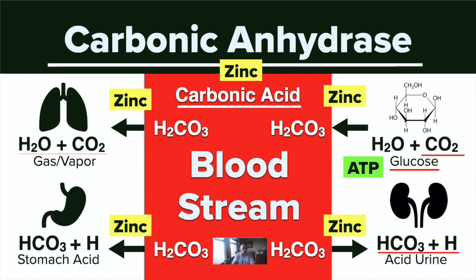The carbonic acid can be dealt with in the lungs, where it will be disassociated into water and carbon dioxide that we breathe out as CO2 gas and water vapor. Carbonic acid can also go to a red blood cell, the pancreas, the lungs, the stomach, or the kidneys — the body has an intelligent way of dealing with the breakdown of glucose.